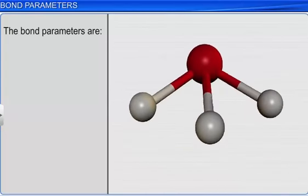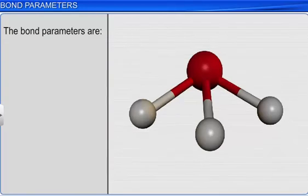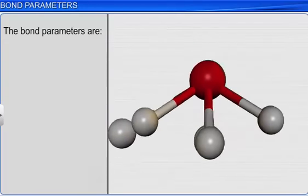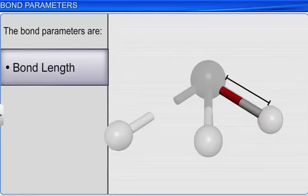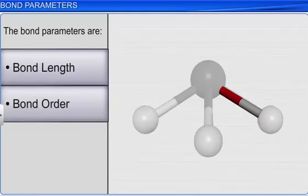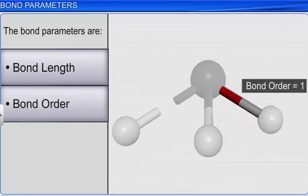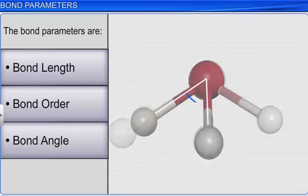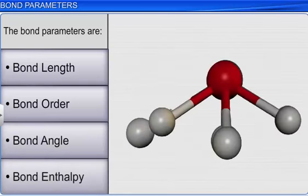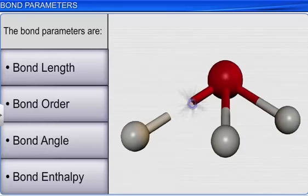The factors that affect chemical bonds are known as bond parameters. Some such factors are bond length, bond order, bond angle, and bond enthalpy. Let's look at each of these factors.